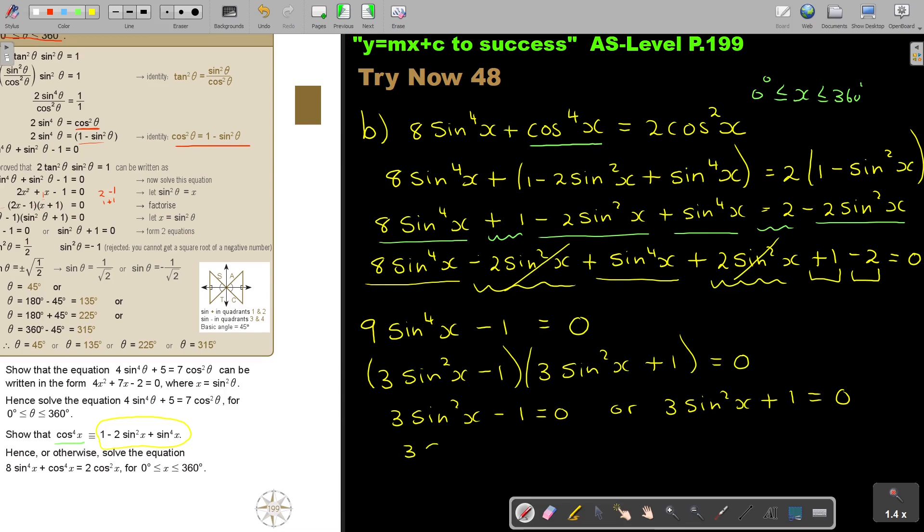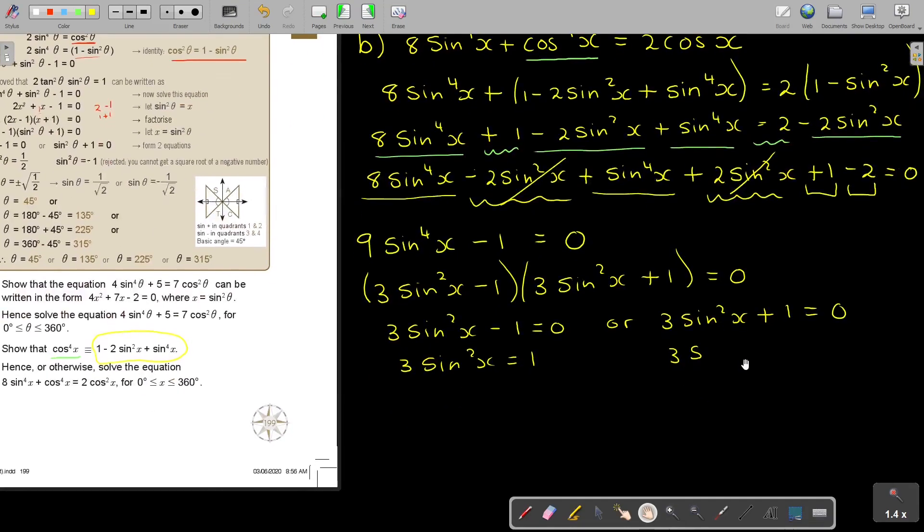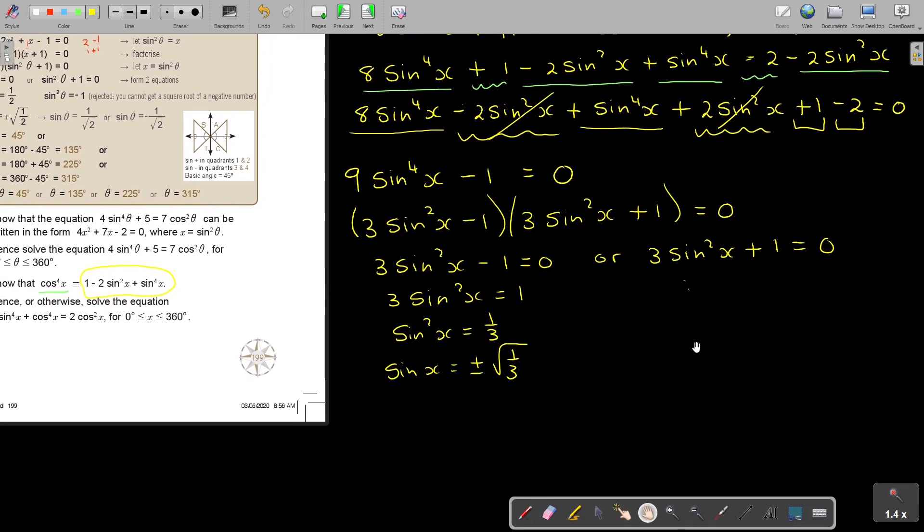So 3 sin 2x equals 1. Let's first finish this one. I will come to this one. See? So I divide. So I have sin squared x is a third, and then I have sin x equals plus minus the square root of a third. And if I press it on the calculator...